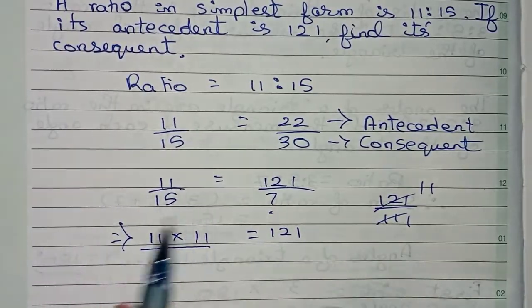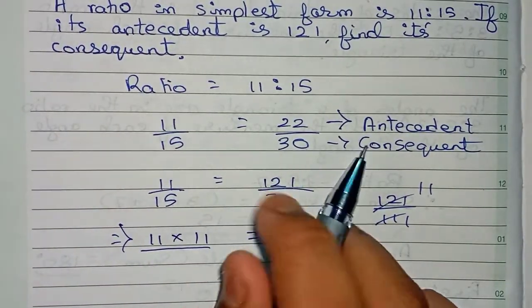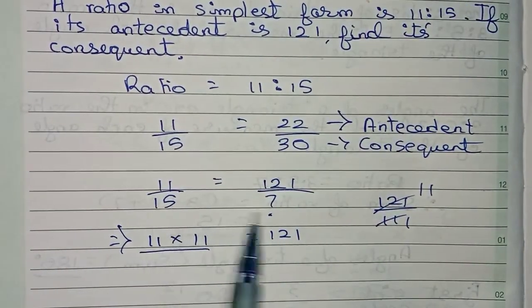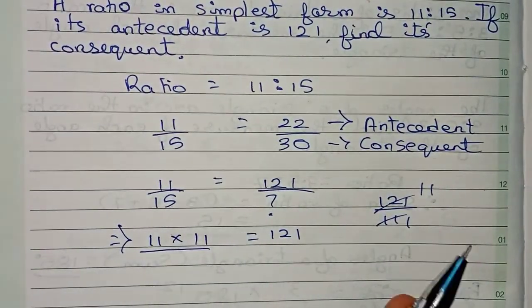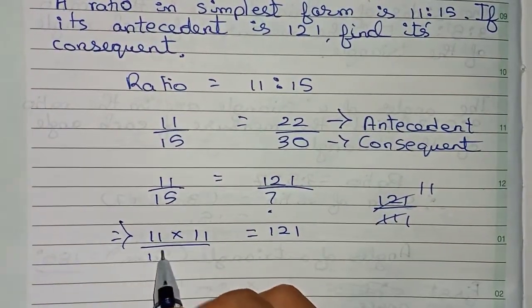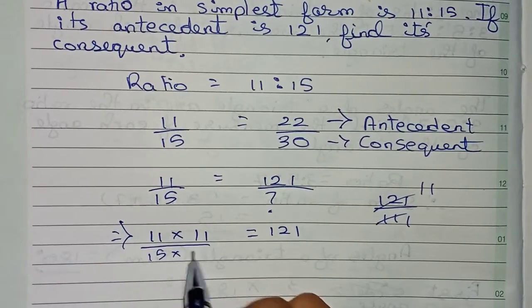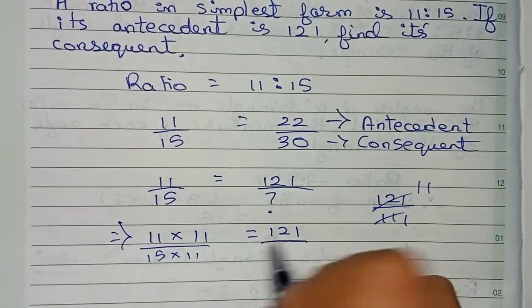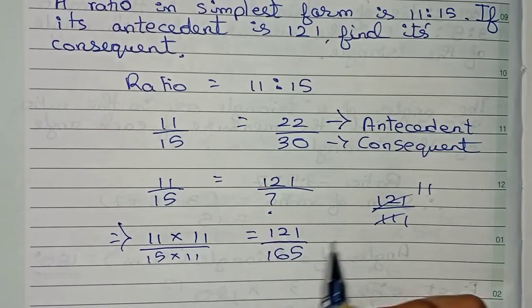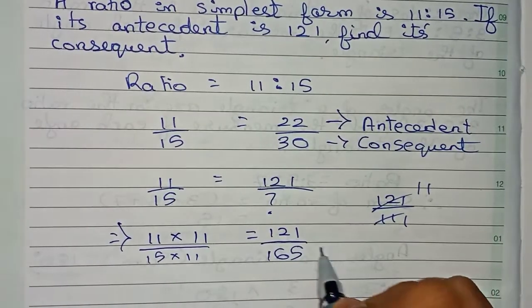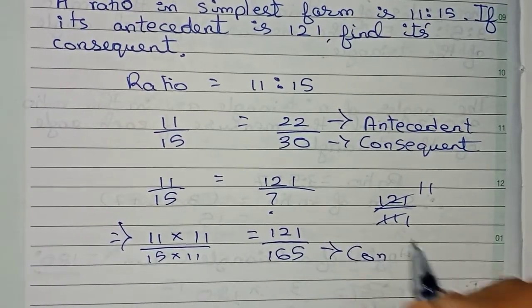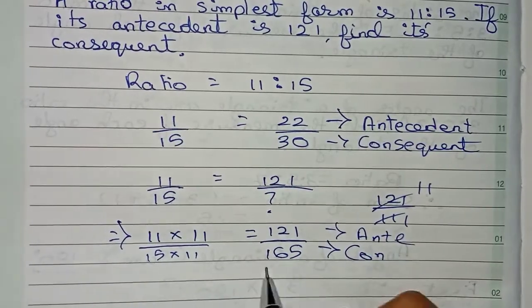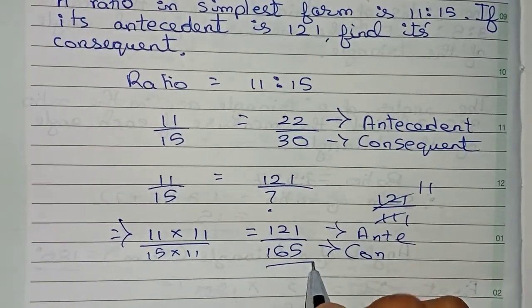Since we are multiplying 11 by 11, we also have to multiply 15 by 11. So it becomes 15 into 11, which equals 165. Therefore, the consequent is 165. Our answer for this question is 165.